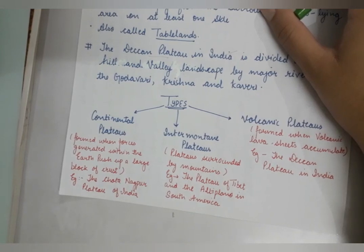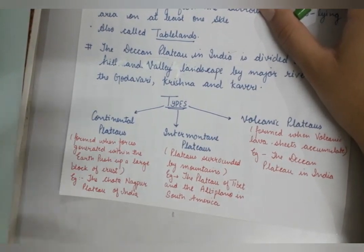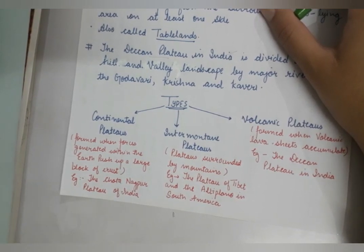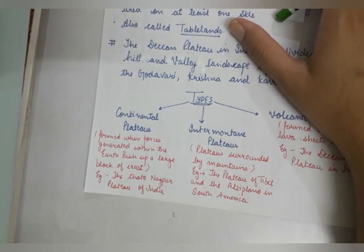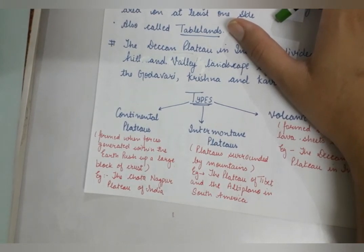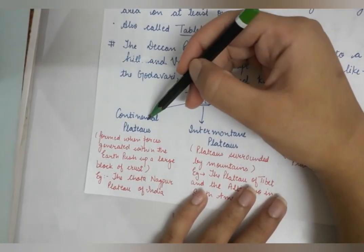Inter-mountain plateaus are surrounded by mountains — 'inter' means between the mountains. The Plateau of Tibet and the Altiplano Plateau in South America are examples of inter-mountain plateaus. Continental plateaus are formed when forces generated within the earth push a large block of the crust upwards. The Chota Nagpur Plateau in India is a continental type of plateau.